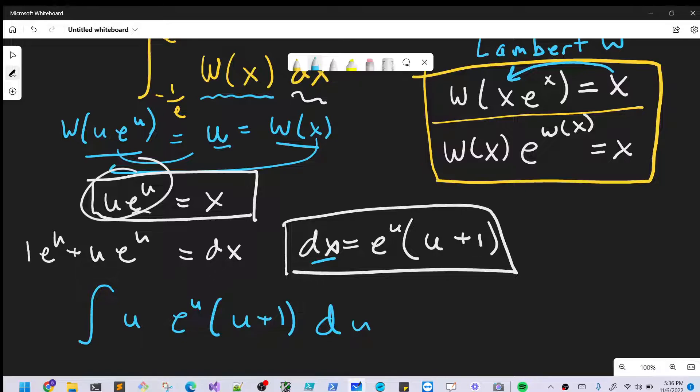And I forgot my du here. Okay, so there's our du. And what I can do to clean this a little bit is I just want to multiply this in here. I'm just going to rewrite it all. So we're going to have e to the u, u squared plus u du.